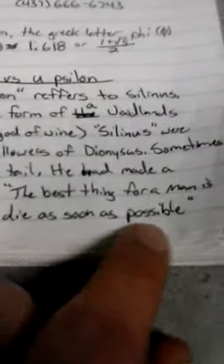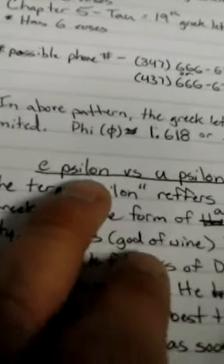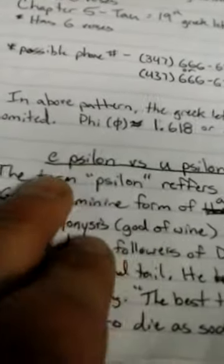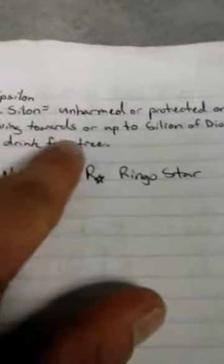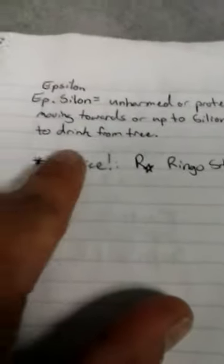They're all drunk followers and the followers were quoted for saying, the best thing for a man is to not be born or to die as soon as possible. So, that is Silinus, where the word Cylon comes from. Now, E and U have their own little stories in Latin, which I can get into later. But basically, after breaking down Epsilon, or Ep-Cylon, or E-Cylon, the etymology really breaks down to this. It's an unharmed or protected, they are unharmed or protected ones moving towards or up to Cylion of Dionysus to drink from tree.